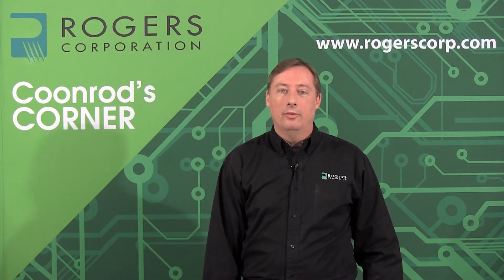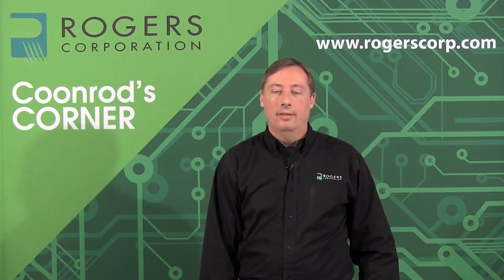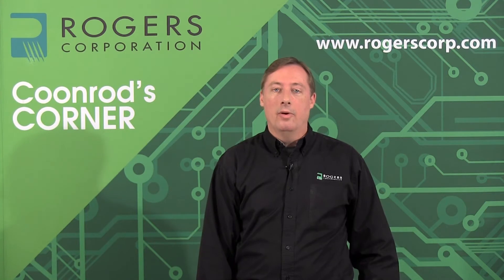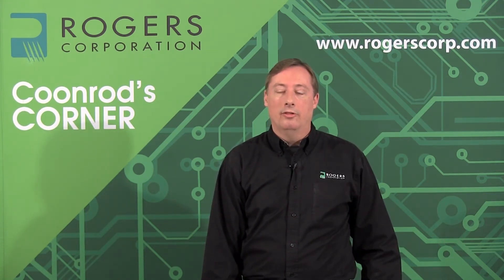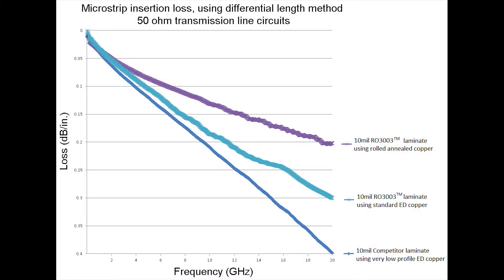Another good comparison is to look at these same circuits with a thicker substrate. Thicker substrates are less sensitive to copper roughness concerns, making copper type less meaningful, so you are looking more at the substrate properties. I made circuits on these same materials with 10 mil thick substrates — the following graph shows insertion loss for microstrip transmission line circuits tested out to 20 GHz. It is clear to see that as you go thicker, the benefits of RO3003 shine very bright, showing quite a difference between these materials, due to looking more at substrate properties and less at the effects of copper roughness.